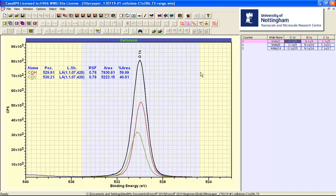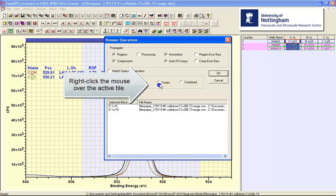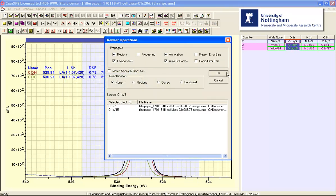If we display the oxygen in the active tile, select the two oxygen regions and then right-click, it remembers the set of propagation options that were ticked before and we say OK.